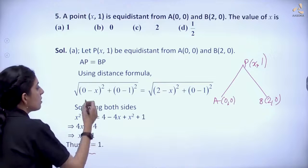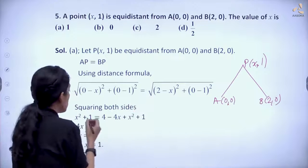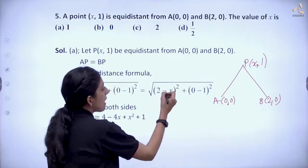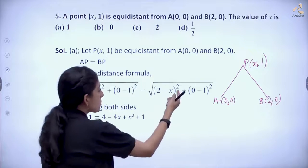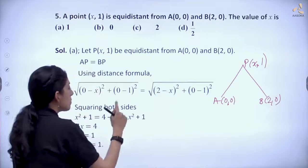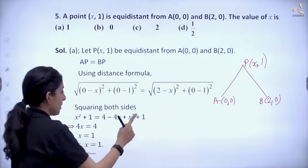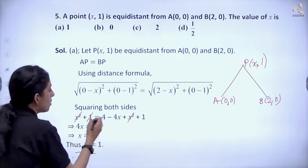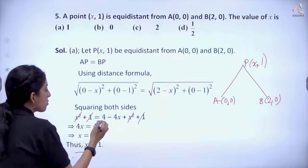Squaring both sides, the square roots cancel out. We get x squared plus 1 equals (2 minus x) squared plus 1. Expanding (2 minus x) squared gives 4 plus x squared minus 4x plus 1. We can cancel x squared and 1 from both sides, leaving 4 minus 4x equals 0.